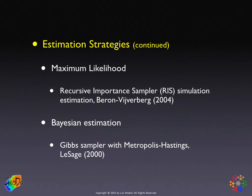The two main methods are maximum likelihood on one side and Bayesian estimation on the other. They both heavily rely on the likelihood function. For maximum likelihood in particular, there's a simulated likelihood estimation method called the recursive importance sampler, or RIS, in a chapter by Barron and Weiberberg. It's a really clever approach that works around the problem of having to integrate out the n minus 1 dimensions of the multivariate normal distribution by setting up a system where you recursively build up these distributions by sampling.